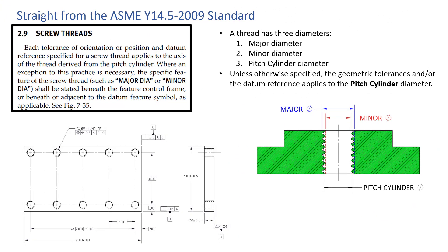I have pulled section 2.9 right out of the ASME Y14.5 2009 standard. Here is how it reads as far as what's being positioned, located, and oriented for threads. It says: each tolerance of orientation or position and datum reference specified for a screw thread applies to the axis of the thread derived from the pitch cylinder. If you do a search for 'pitch cylinder' in the PDF of the standard, it is going to show up one time, right here in section 2.9.